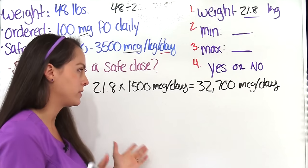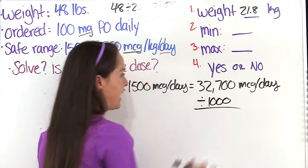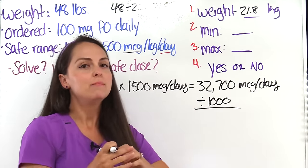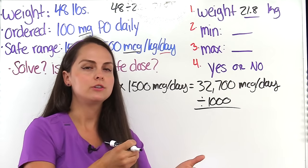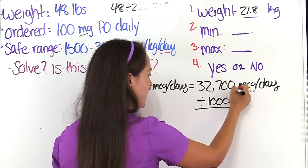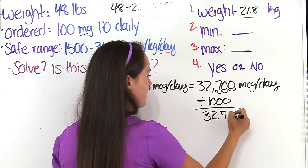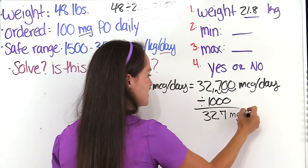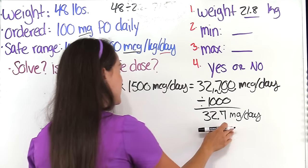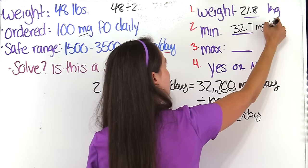To convert, you can either divide by 1,000 or use the math trick of moving the decimal three places to the left — because we're going from micrograms, which is smaller, to milligrams, which is larger. Moving the decimal three places gives us 32.7 milligrams per day. That is our minimum dose: 32.7 milligrams per day.